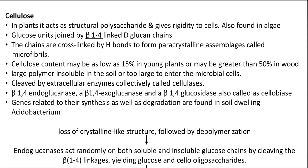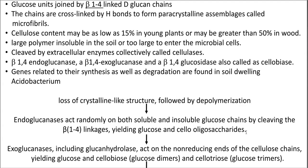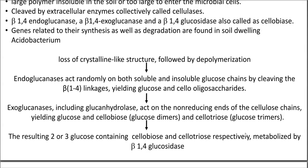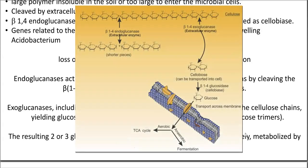Cellulases include beta-1,4-endoglucanase, beta-1,4-exoglucanase, and beta-1,4-glucosidase enzyme. The steps involved in cellulose degradation include: first, loss of crystalline-like structure followed by depolymerization. Then comes the role of endoglucanase enzyme, which randomly attacks both soluble and insoluble glucose chains by cleaving the beta-1,4 linkages, yielding glucose as well as cellulose oligosaccharides. The next enzyme to follow is exoglucanase — including gluconohydrolase-like enzymes — which acts on the non-reducing ends of the cellulose chains, yielding glucose as well as cellobiose and cellotriose molecules. The resulting 2 or 3 glucose-containing cellobiose and cellotriose are finally degraded by beta-1,4-glucosidase enzyme.